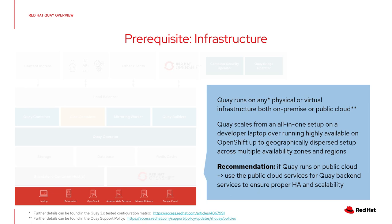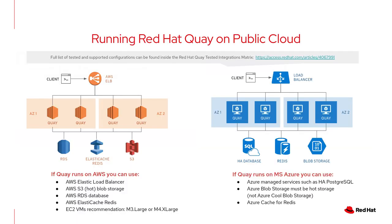We recommend that if the infrastructure is public cloud, you use the public cloud services for the backend services such as database and storage. For example, if you run on AWS you can use AWS services for load balancer, storage, the database itself, the Redis cache, and we also recommend at least M3 large virtual machines — probably better is M4 x-large sizing.